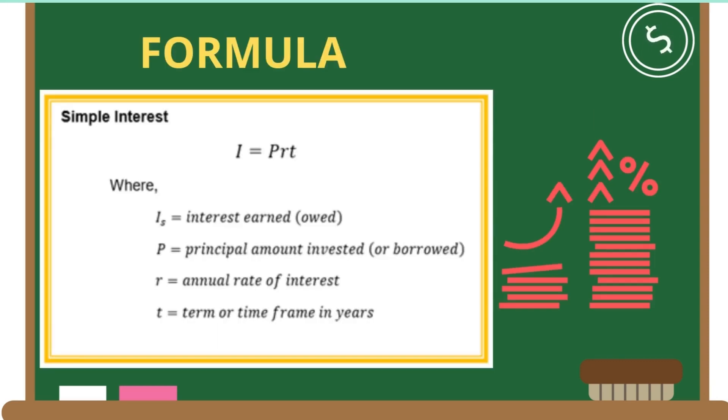Now this is the formula for simple interest: I = Prt. Remember, the interest formula uses only lowercase r. The interest or simple interest (I_s) equals interest earned or owed, P is the principal, r is the annual rate of interest, and t is the term or time frame in years.